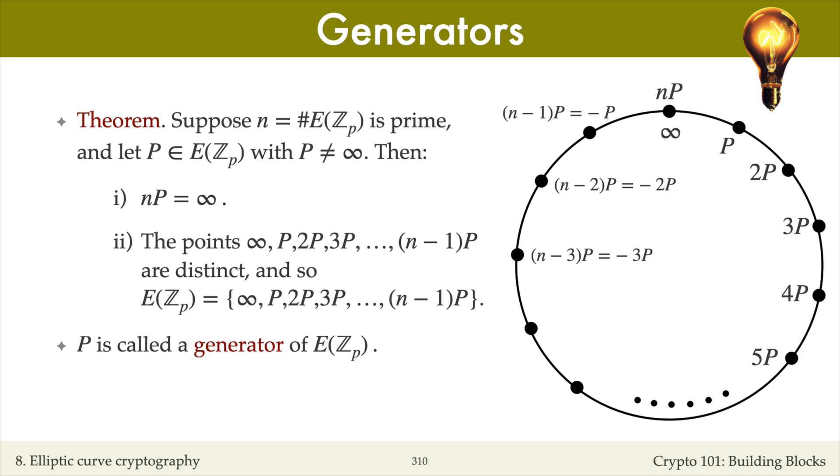As you add P to itself repeatedly, you go around the cycle forever and ever. If you go around the cycle in the counterclockwise direction, then you encounter the negative multiples of P. So minus 1P, which is the same as n minus 1P, minus 2P, minus 3P, and so on.